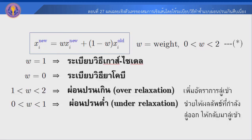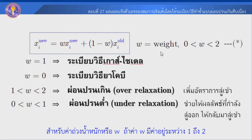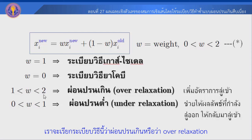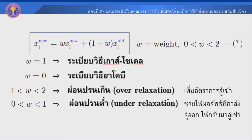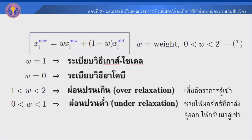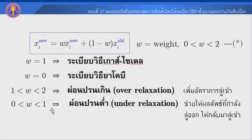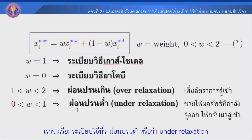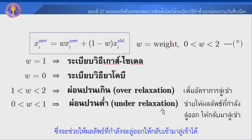In terms of the value of W: if W has a value in the range 1 to 2, we call this over-relaxation, which accelerates the convergence of Xi. And if W has a value in the range 0 to 1, we call this under-relaxation, which helps stabilize finding the value of Xi.